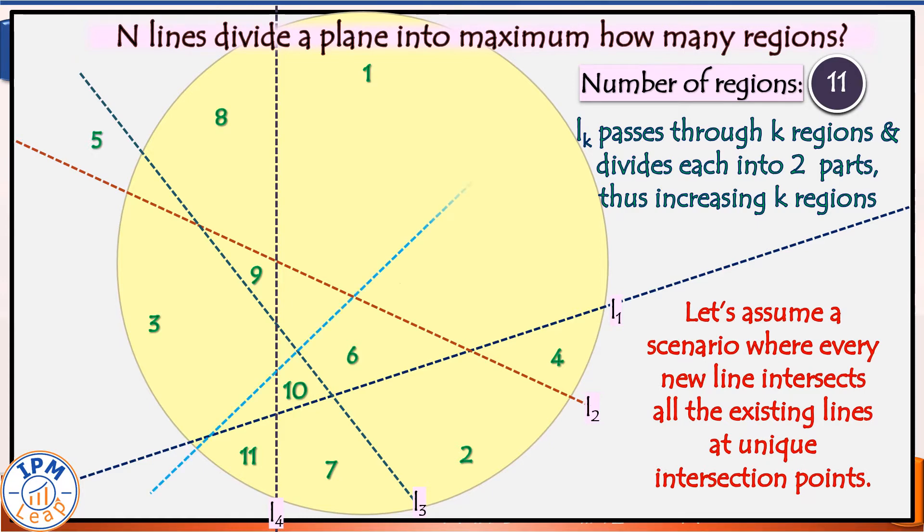Let us see if this holds true for line number 5 and line number 6. Line number 5, the blue line, intersects all the four previous lines and passes through these five regions. 1, 2,